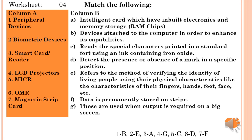Now worksheet four — match the following. Column A: peripheral device — answer is add-on devices attached to the computer to enhance its capability. Biometric device — answer is: refers to verifying the identity of a living person. Smart card — answer is: an intelligent card which has inbuilt electronics and memory storage. LCD projector — answer is: when output is required on a big screen. MICR, Magnetic Ink Character Reader — answer is: reads special characters printed in a standard font using ink containing iron oxide.